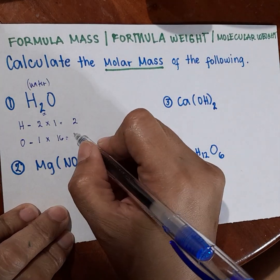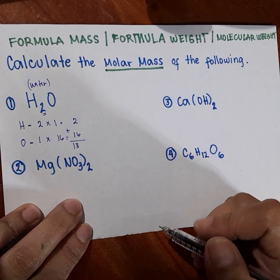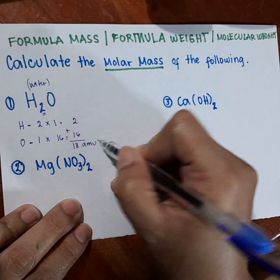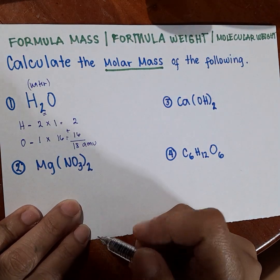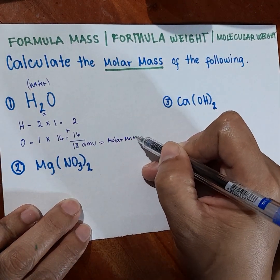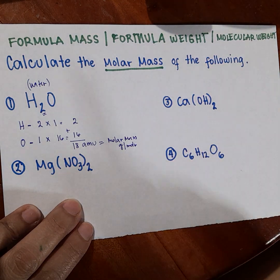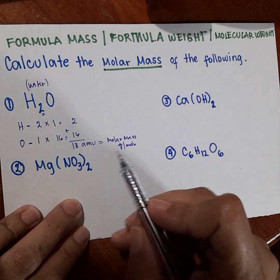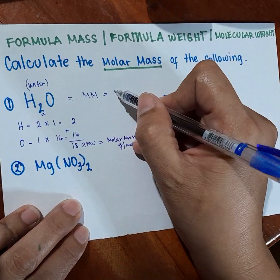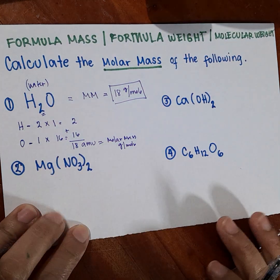Getting the products: 2 times 1 is 2, and 1 times 16 is 16. Adding them we get 18. So the formula mass is 18 atomic mass units (amu). This atomic mass unit is also equal to the molar mass. Since molar mass is always expressed in grams per mole, the molar mass of H₂O is 18 grams per mole.